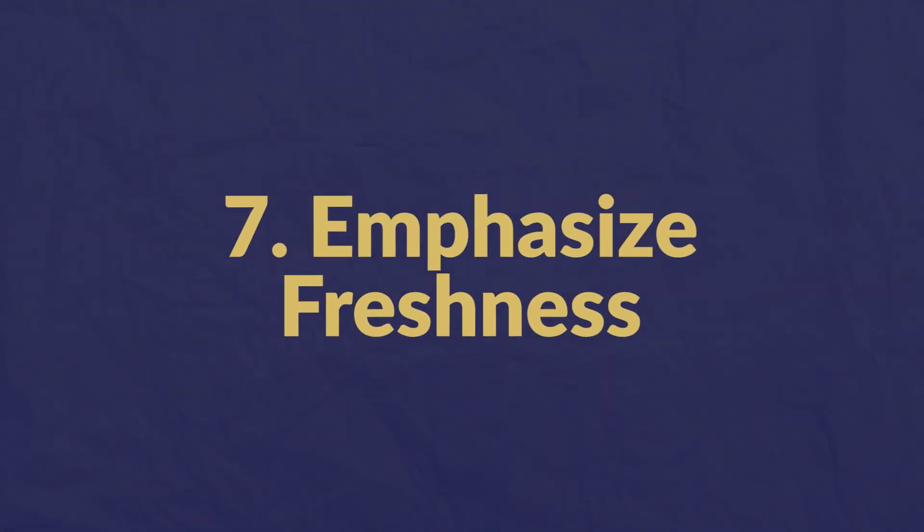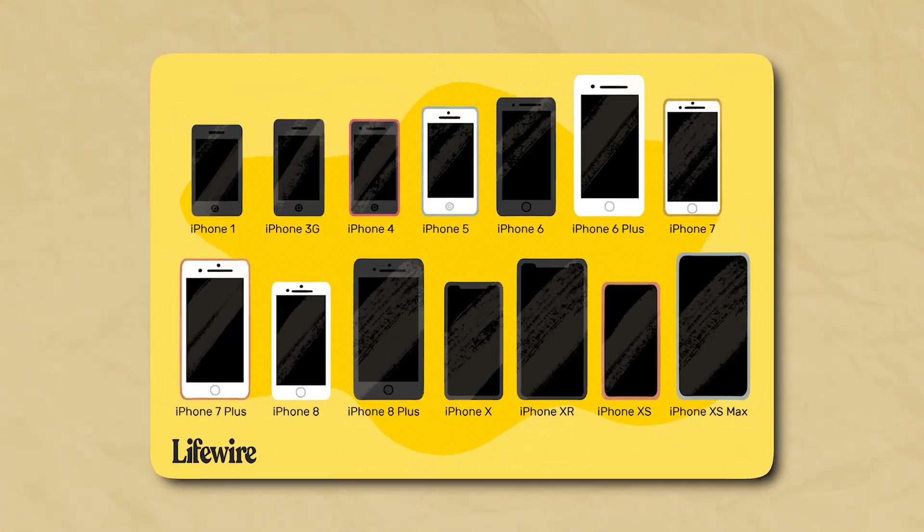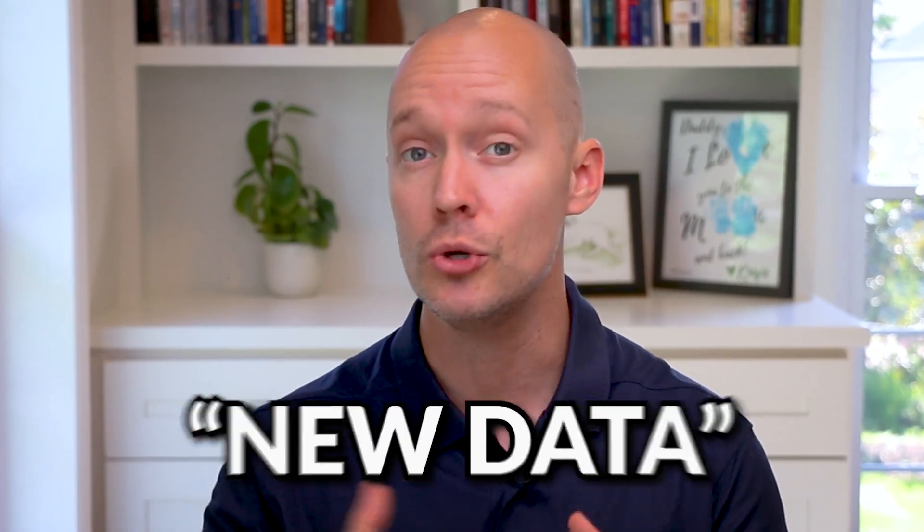Number seven: emphasize freshness. People prefer new content, and emphasizing freshness in your title works really well. One persuasion principle is that people love new things — something simply being new can be a big driving force, hence why you're more likely to buy a newer car model. Easy ways to incorporate freshness into your title tags include using the word "new," adding the year, or referencing new data.